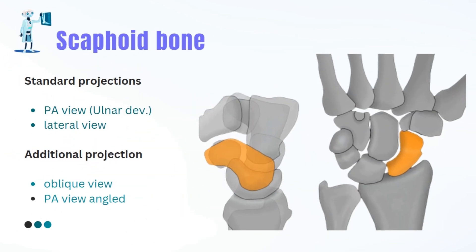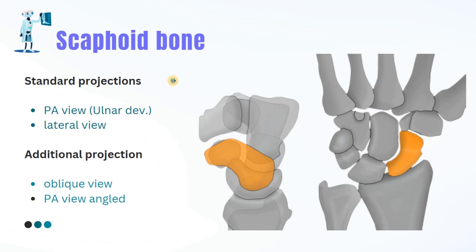Let's jump into the radiographic technique of the scaphoid bone. Scaphoid X-rays are highly requested from emergency departments, but in my experience most physicians will not mention the scaphoid view on the request — they may just order a wrist X-ray PA and lateral. I highly suggest X-ray workers and radiographers take a brief history from the patient. If you know the patient has a history of falling, especially a fall onto an outstretched hand, you may recognize that a scaphoid injury is likely, and through that you will implement the specialized technique and procedure to evaluate the scaphoid bone.